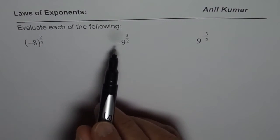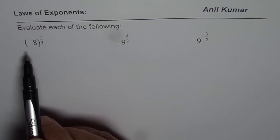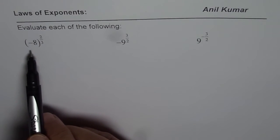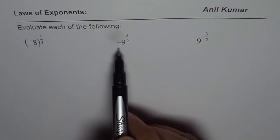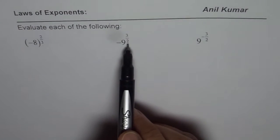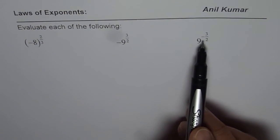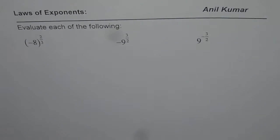So we have three questions here. We need to evaluate minus 8 whole to the power of 2 over 3, minus of 9 to the power of 3 over 2, and 9 to the power of minus 3 over 2. So these are the three expressions for you. You can pause the video, evaluate these terms, and then look into my suggestion.